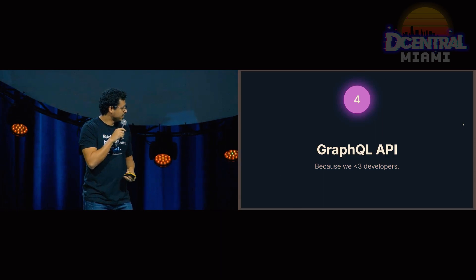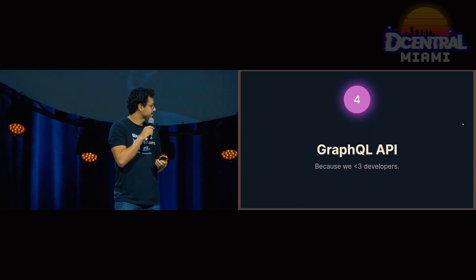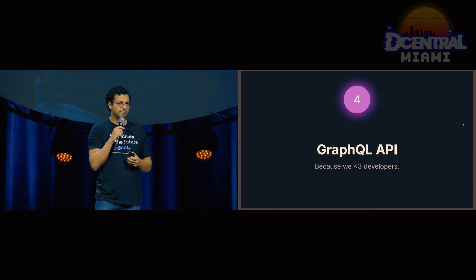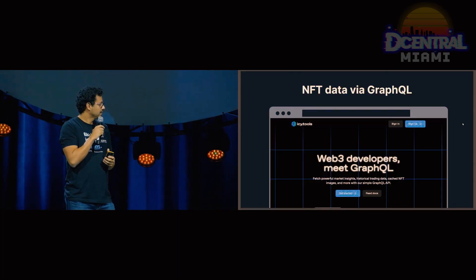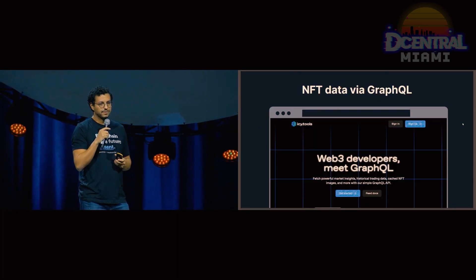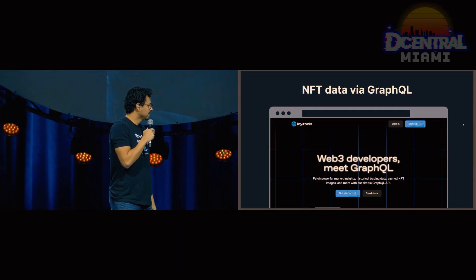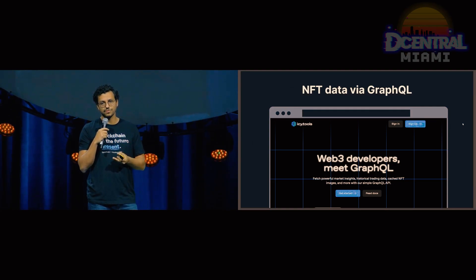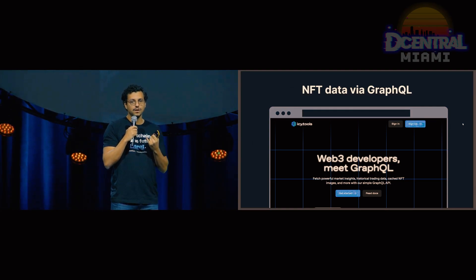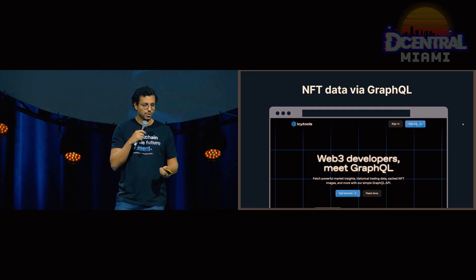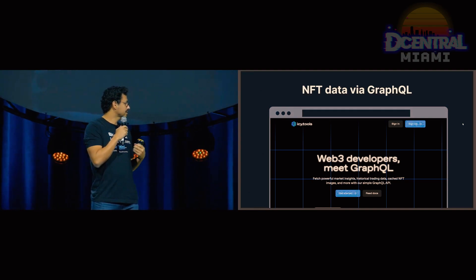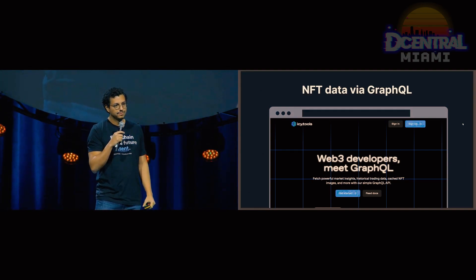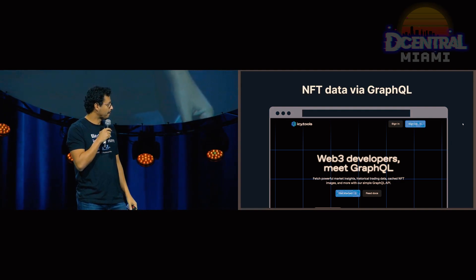We also have a GraphQL API. If you've ever used Magic Eden, you probably have used our product unknowingly. We have a GraphQL API that gives you all sorts of NFT data, including historical prices, market insights, cached NFT images, and a whole lot more.